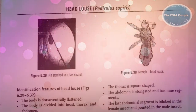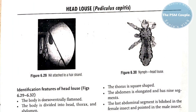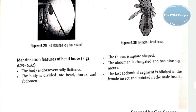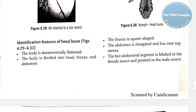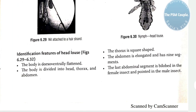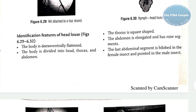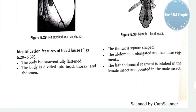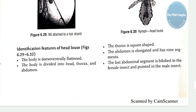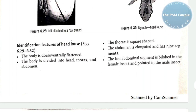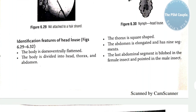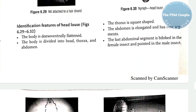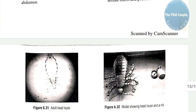Starting with the first spot for today: the head louse, Pediculus capitis. Identification features: the body is dorso-ventrally flattened; body is divided into head, thorax, and abdomen; thorax is square-shaped; the abdomen is elongated and has nine segments. The last abdominal segment is bilobed in the female insect and pointed in the male insect.